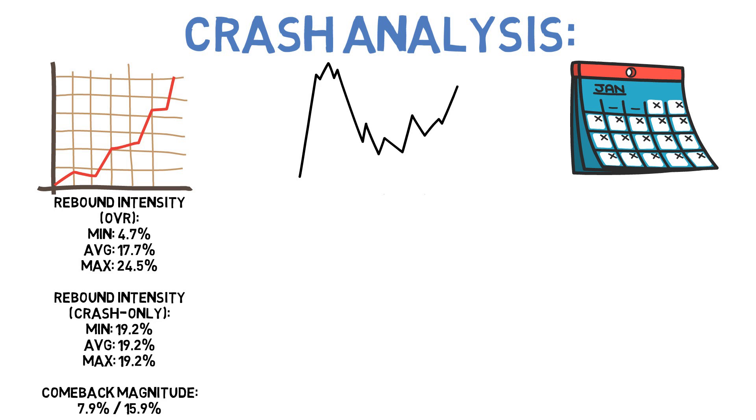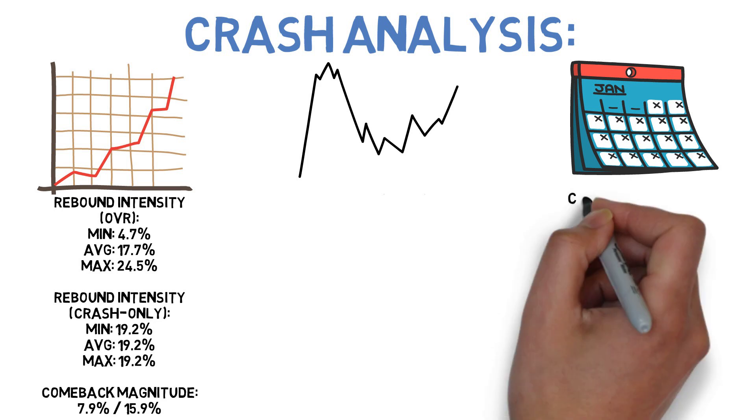To get an idea of its longer-term resiliency, we can look at what I call the portfolio's comeback magnitude, which measures how much the portfolio grows each year on average between bottoming out and setting new all-time highs. In this case, the Swenson portfolio's comeback magnitude was 7.9% per year. A crash-only filter shows a comeback magnitude of 15.9%, suggesting that after the Great Recession, it did much stronger than it normally does coming out of the crash.